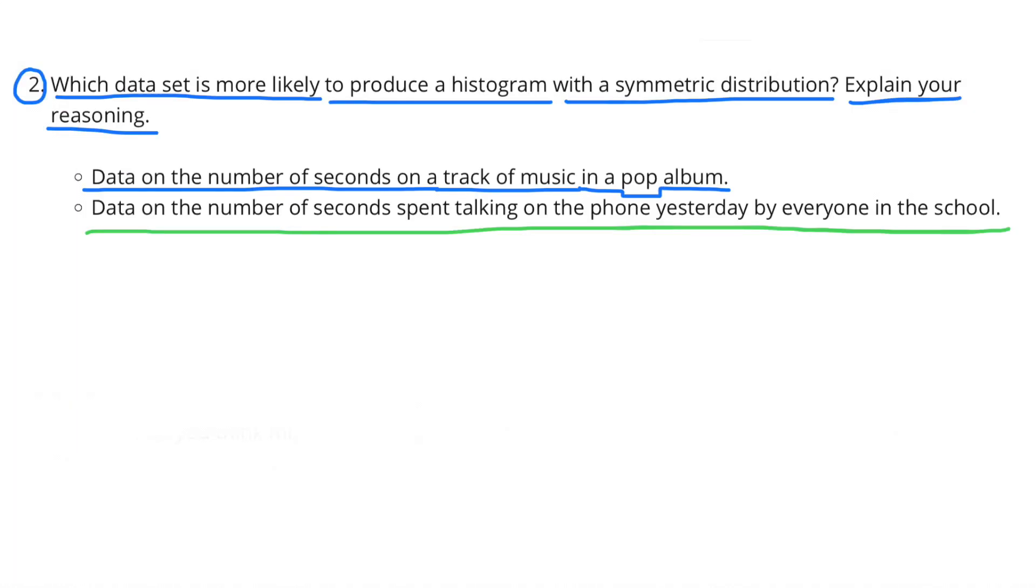Number 2. Which data set is more likely to produce a histogram with a symmetric distribution? Explain your reasoning. Data on the number of seconds on a track of music in a pop album, or data on the number of seconds spent talking on the phone yesterday by everyone in the school?